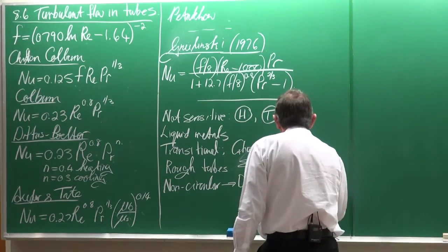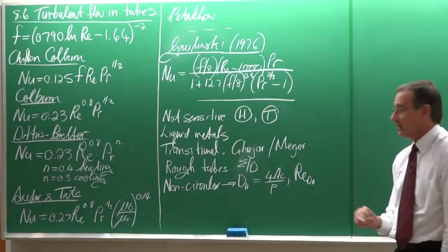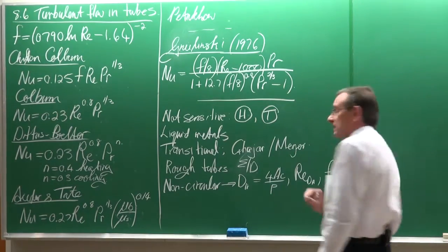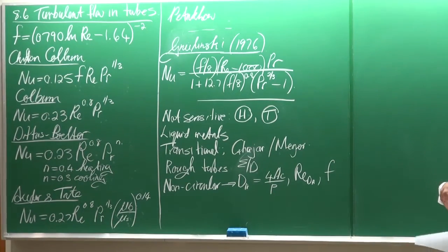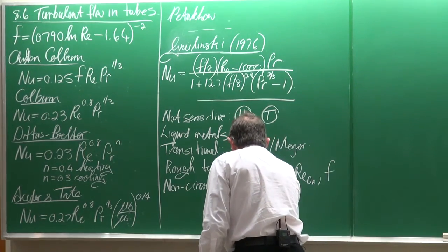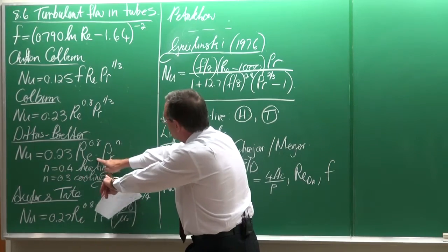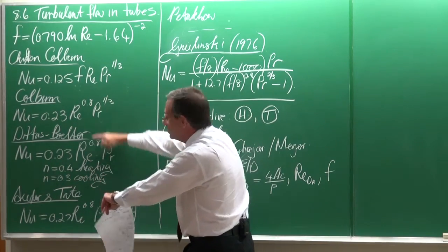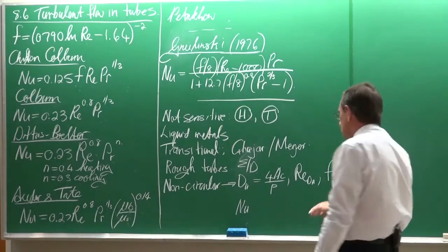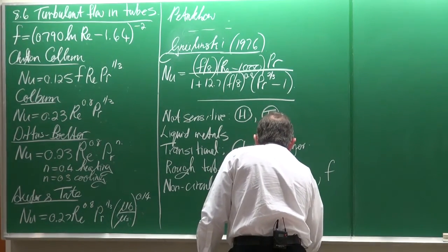And if you use that, then you can go and calculate the Reynolds number based on the hydraulic diameter, and you can get the friction factor based on the hydraulic diameter. And then you're going to do exactly the same. The Nusselt number that you then, it's going to calculate, will be based on the hydraulic diameter of the Reynolds number. And you're going to get the heat transfer coefficient like that.